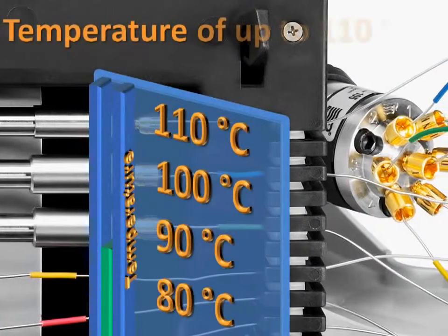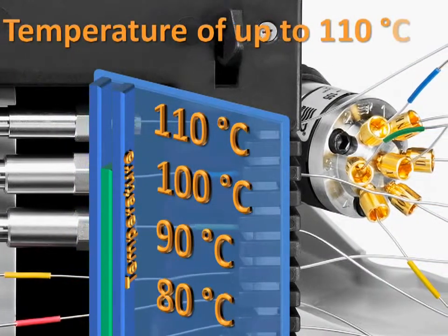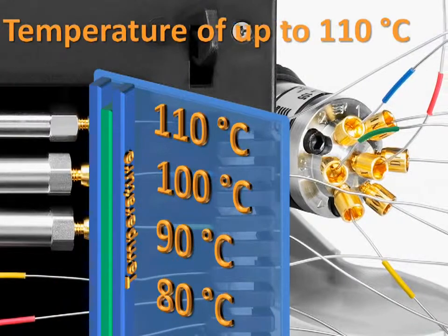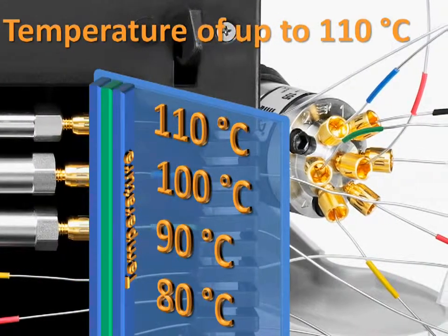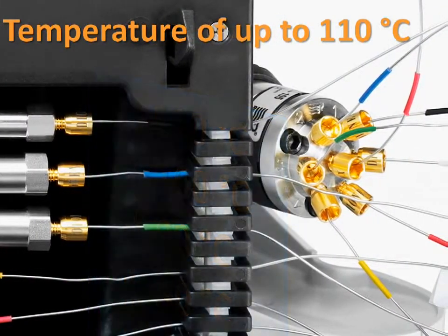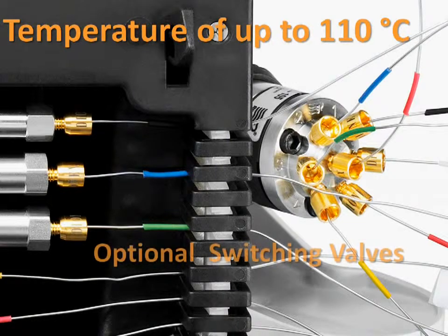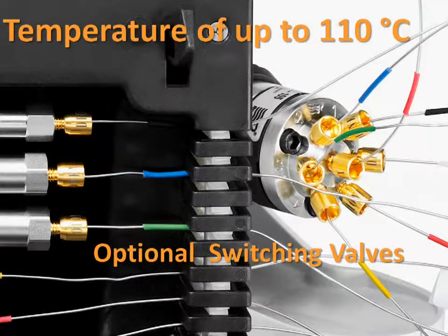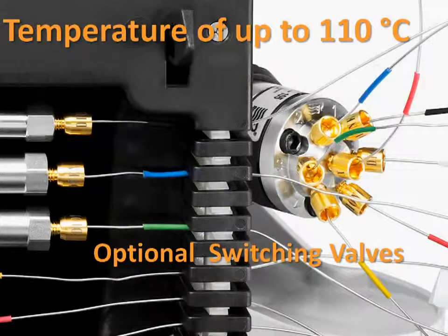The column thermostat provides accurate and precise temperature control up to 110 degrees centigrade, supporting a wide range of applications. It can hold up to 12 columns and features integrated switching valves that provide opportunities for advanced automated techniques.